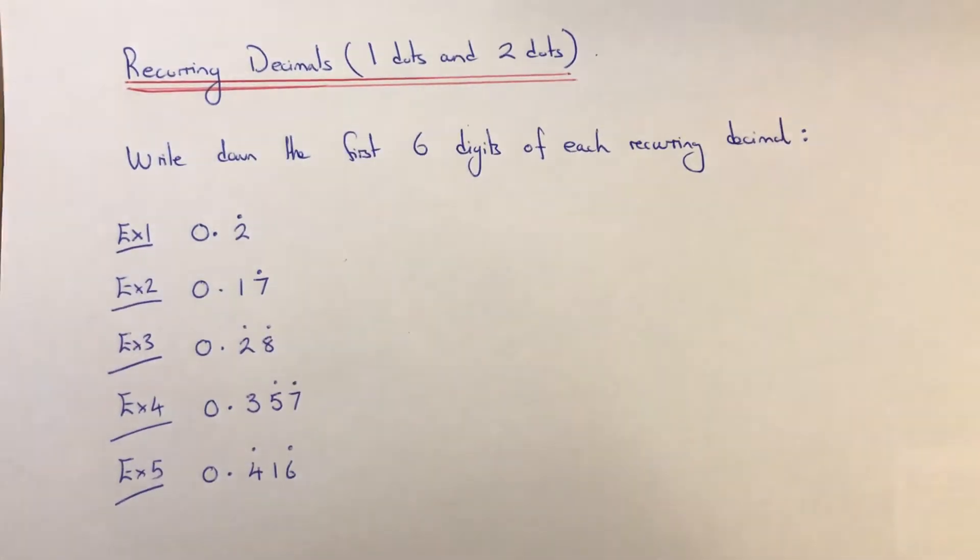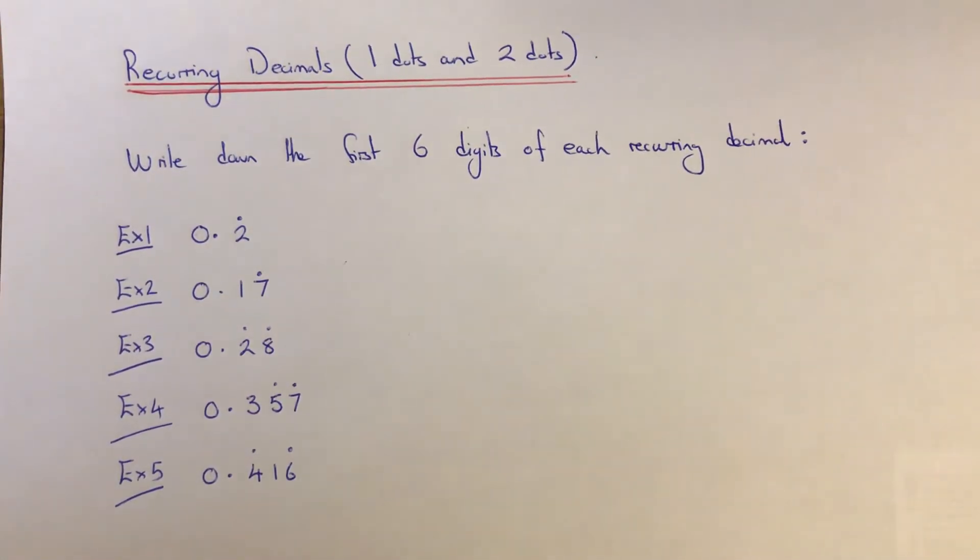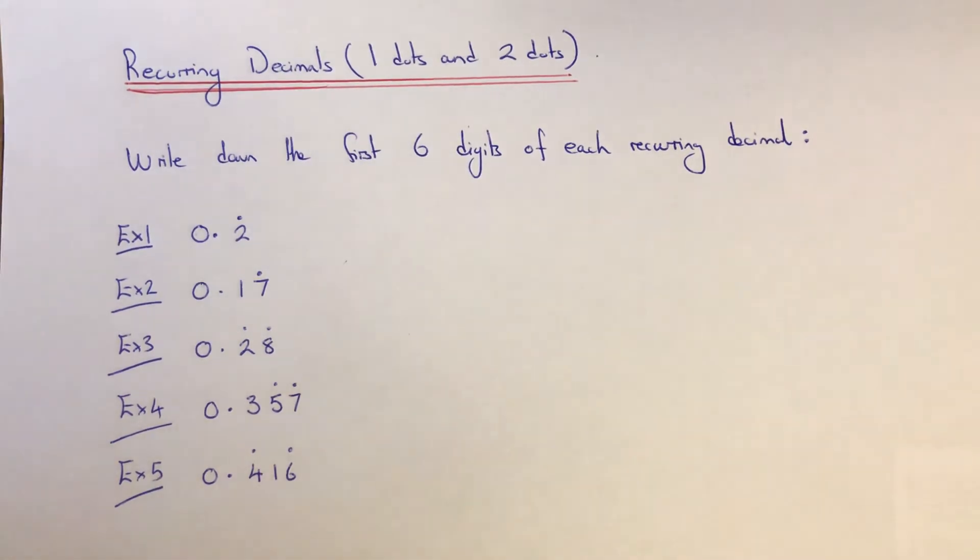Hi guys, welcome back. This is Maths 3000. Just a short video today to show you what the dots on a recurring decimal mean. When you have a recurring decimal, we either have one dot or two dots. You're not going to get a recurring decimal with three or more dots.